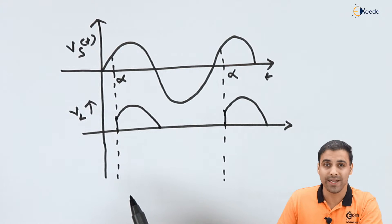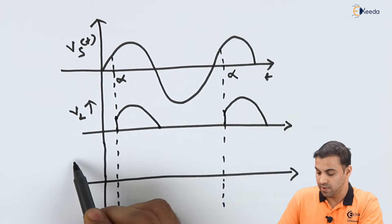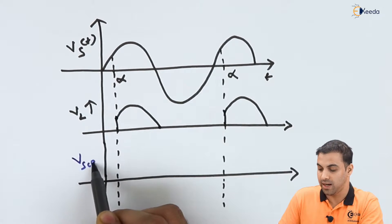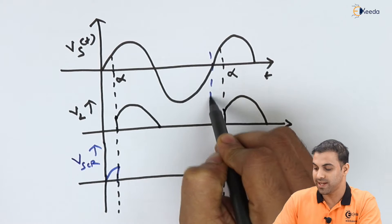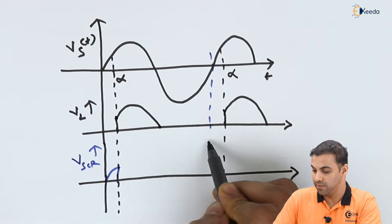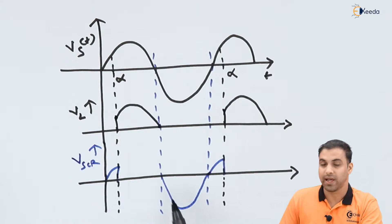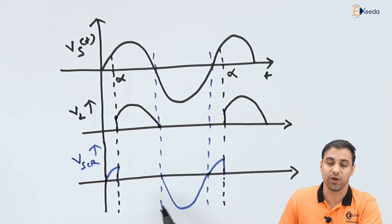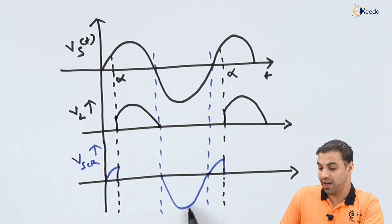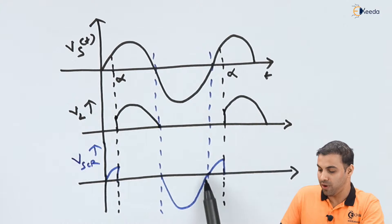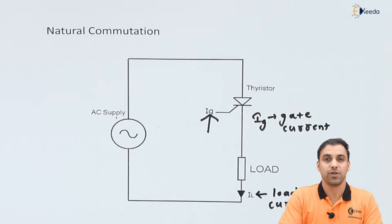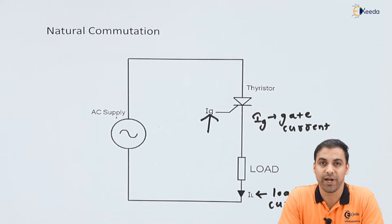If I draw the voltage across the thyristor — let Vscr be the voltage across the thyristor — the voltage waveform will show that during the negative half cycle, up to the point till it starts conducting, the voltage appears across the thyristor. So you can see the waveform across the thyristor drawn here with the blue marker. This is all about natural commutation.